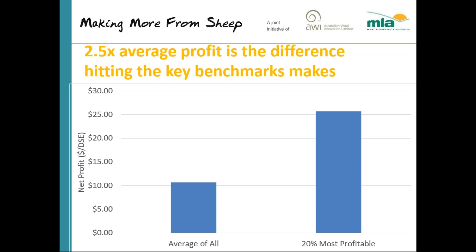Unfortunately for the prime lamb producers, they were hardest hit by dry seasons last year, being in those southern regions particularly — and when I say last year I mean 2015 spring. But within that, the 20% most profitable producers had an average profit per DSE of $25 a DSE. The benchmarks I'm talking to tonight are the ones that help make up that difference — that two-and-a-half times the average profit between the average of all producers and that top 20%.